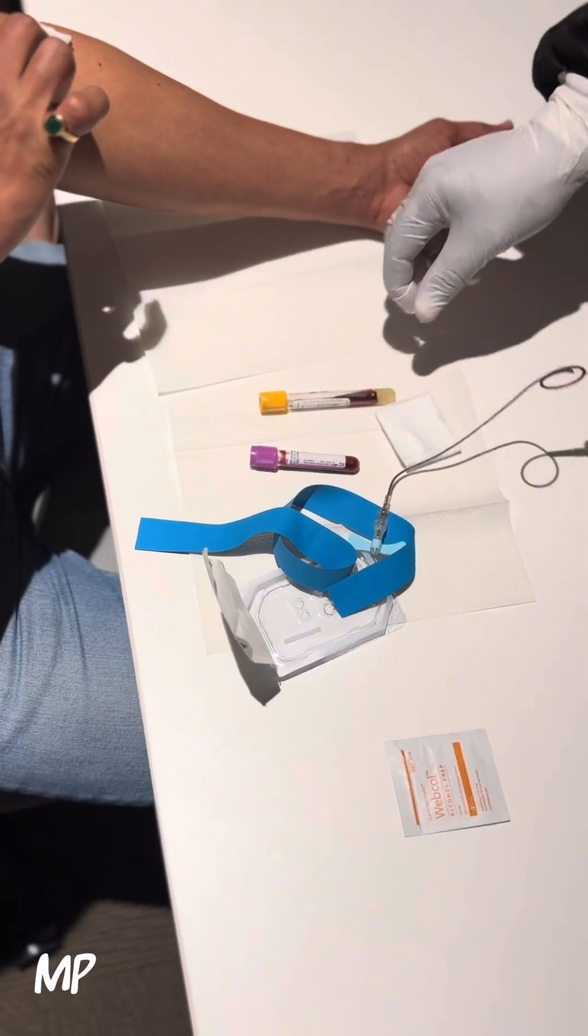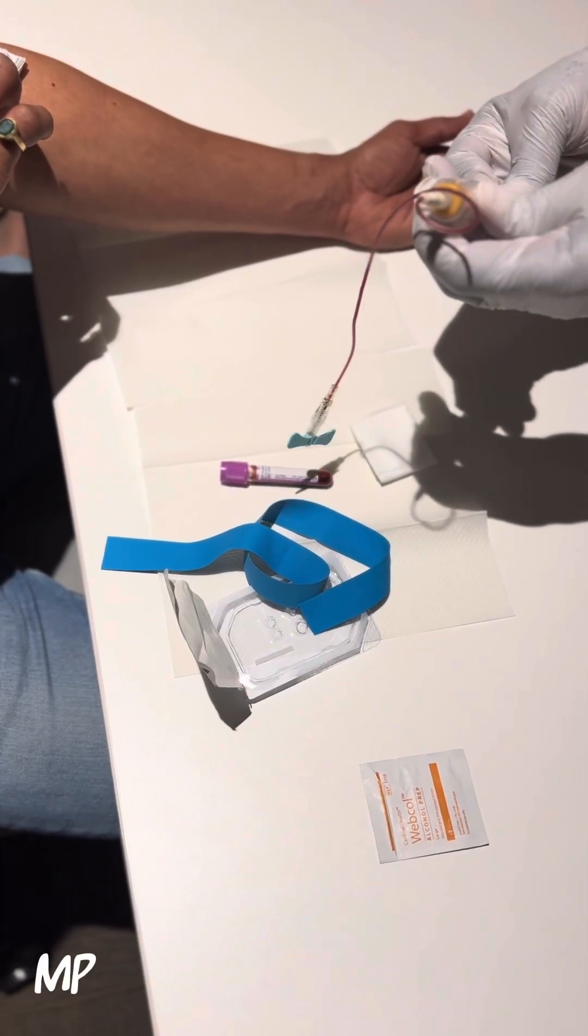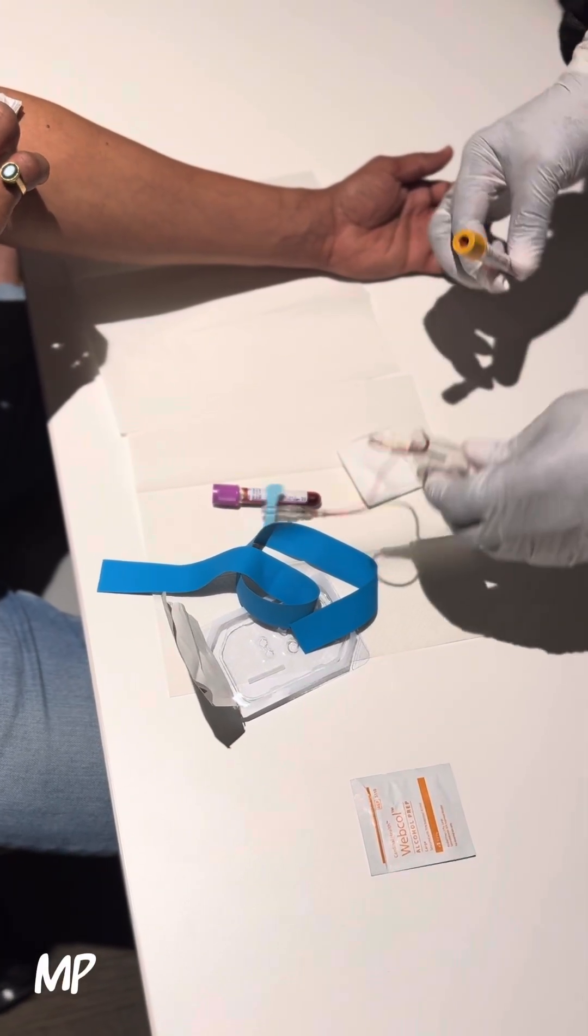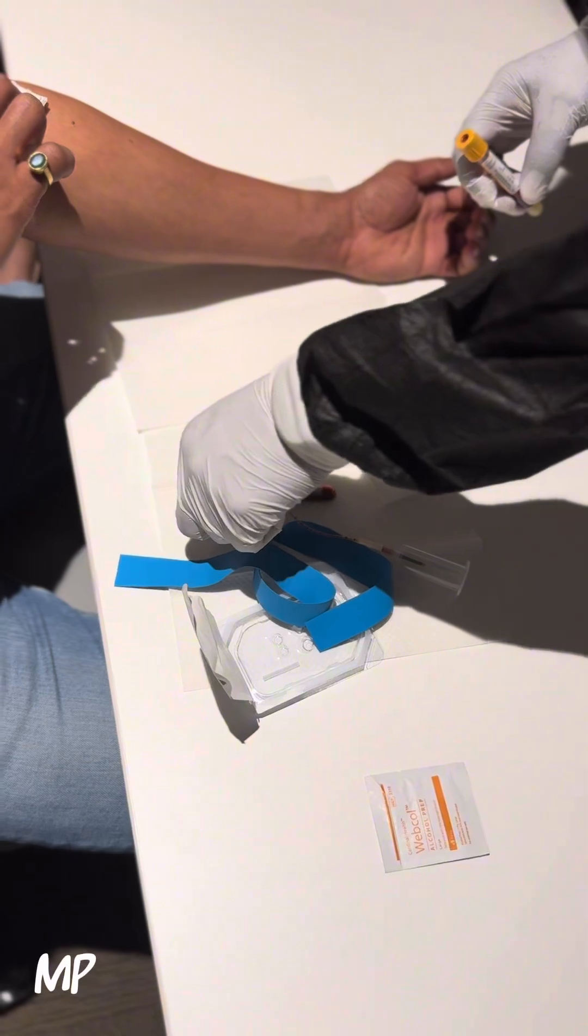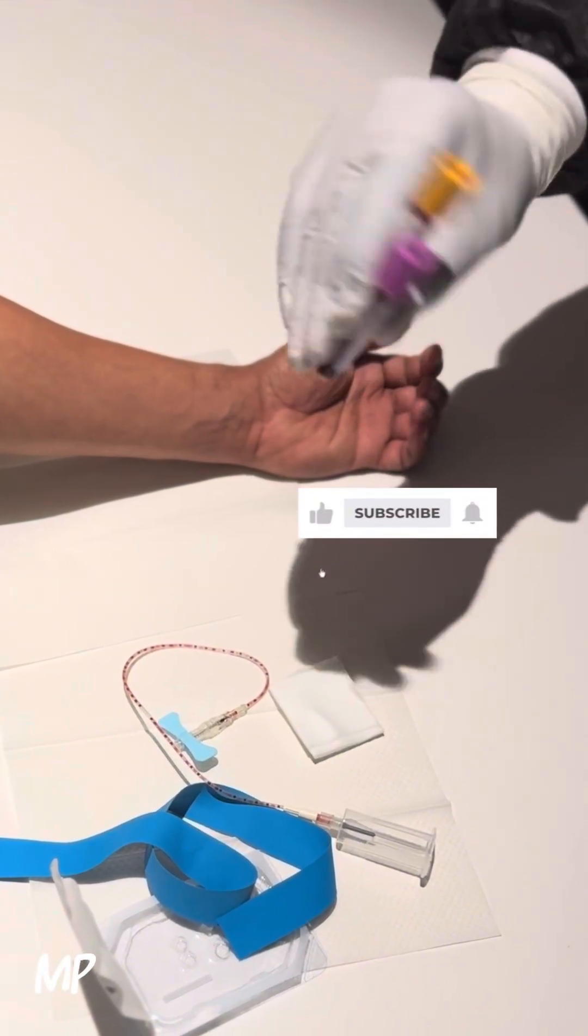If you want to purge the line, you can place your tube in, purge the excess blood, and then always remember to invert your tubes eight to ten times.